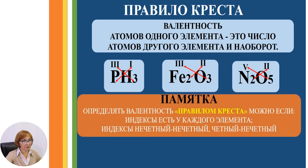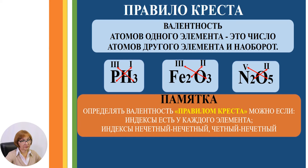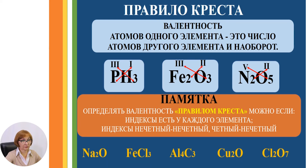Помните, что определять валентность правилом Креста можно, если в веществе есть индексы у каждого элемента, и индексы оба нечётные или один чётный, а другой нечётный. Предлагаю выполнить следующее задание: в данных веществах, используя правило Креста, определить валентность.